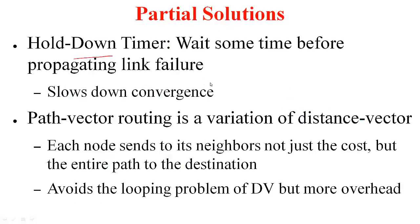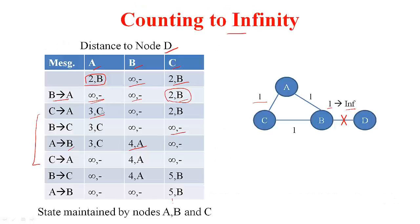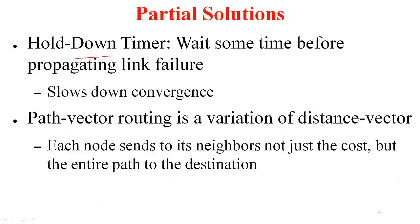A solution that works but slows down convergence is the hold down timer, where basically a node waits for some time before propagating link failures. In the example, when A heard from B it set a cost of infinity, and as soon as C told A it can reach D it changed the cost to 3 with next hop C. When implementing hold down, since A has just heard about a cost of infinity to a specific destination, it will not immediately act on this message — it waits. Hopefully by that time B would have told C, C would have set it to infinity, and C would have told A as well. However, the problem is that waiting before propagating routing table changes slows down convergence.